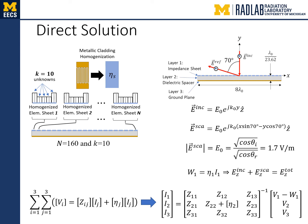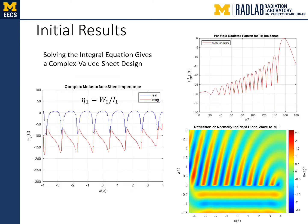The GSTC is then used again to obtain the specification of the impedances as W1 divided by I1. The result, as discussed before, is a complex-valued impedance sheet. The scattered near and far fields are shown on the right — the reflected field is directed to the desired far-field angle, and the near field shows the reflected wavefronts being directed to the specified wide angle of 70 degrees.